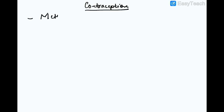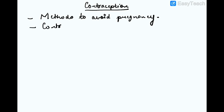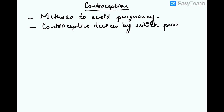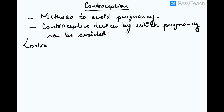Now let us talk about contraception. Contraception means methods to avoid pregnancy. There are many contraceptive devices by which pregnancy can be avoided. Some of the contraceptive methods are as follows.